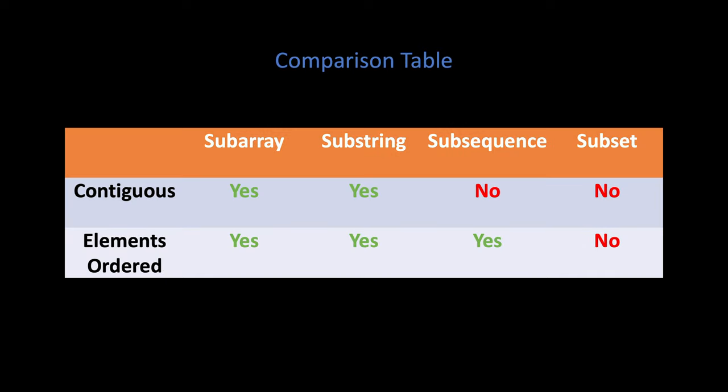Comparison table. As you can see in the table, subarrays and substrings need to be made up of contiguous sequences of elements of their parents, while subsequences and subsets do not have to be.